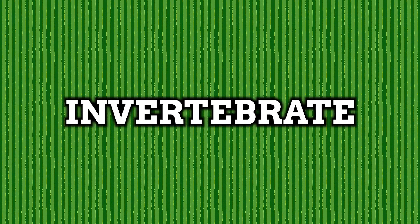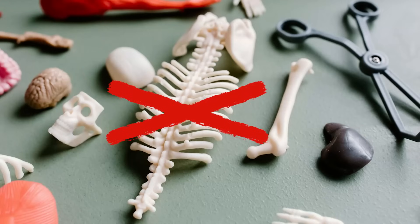Invertebrates is a really good term to start with, as from a scientific perspective it's the best overarching term for these kinds of animals. This word is used for any kind of creature without a backbone or spine — physically, not like a cowardly creature.